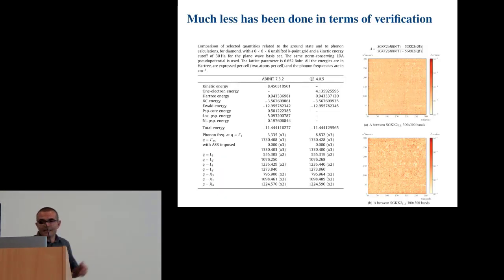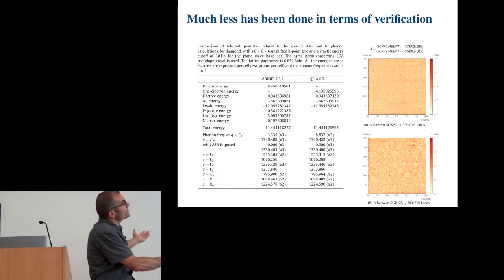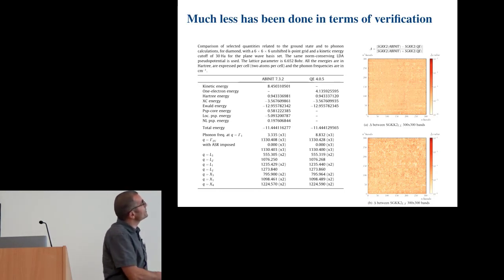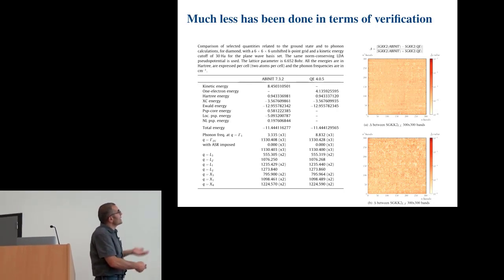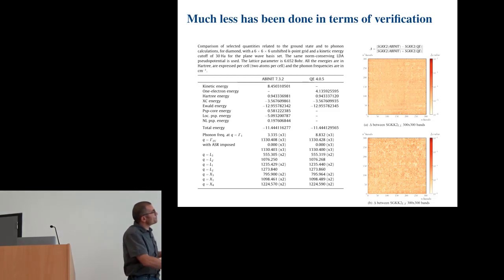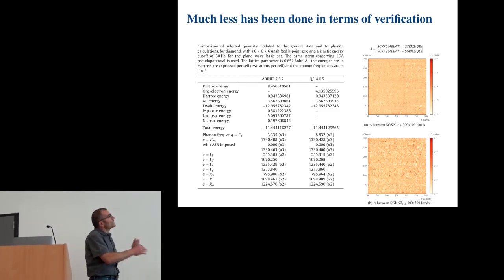And so, typically they ended up showing tables where they were comparing, so in this case it was Abinit version 7, and quantum espresso comparing the different quantities at the level of the total energy. We know the kind of things that we can agree, the kind of agreement that we can reach based on the delta project effort. And then on the phonon frequencies they looked at what they could get, and then also they looked at the electron phonon coupling elements, trying to get a sense of the error that they were making.